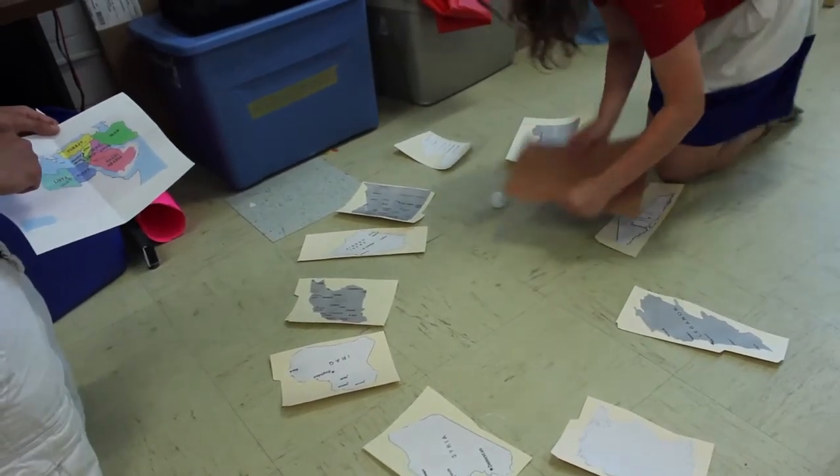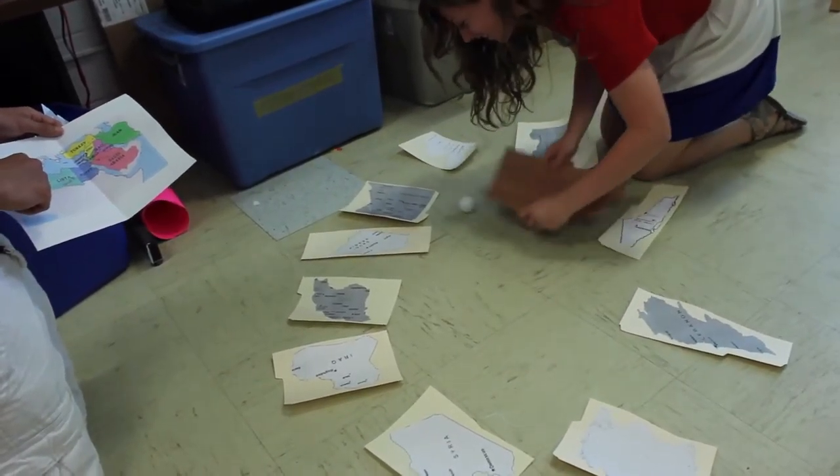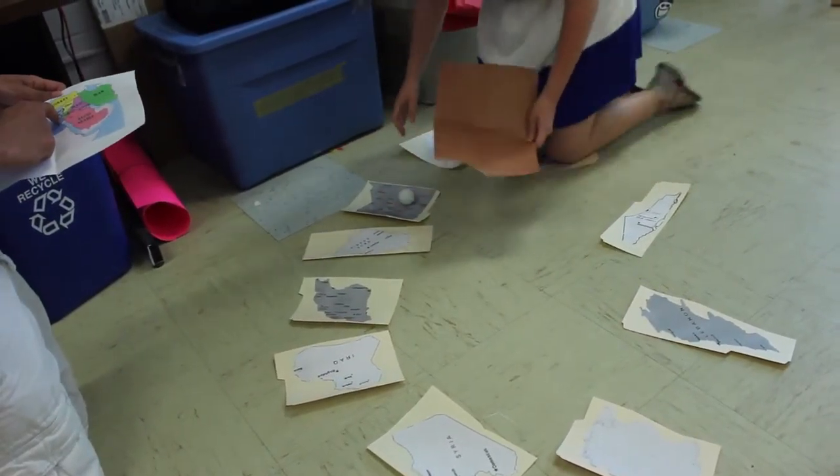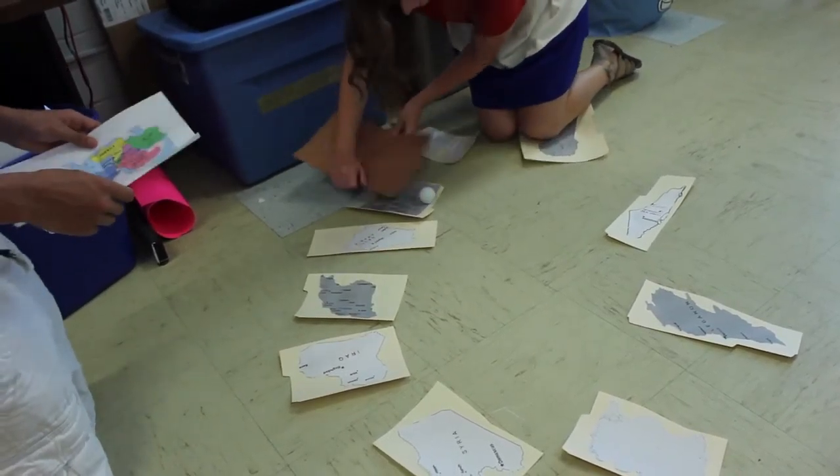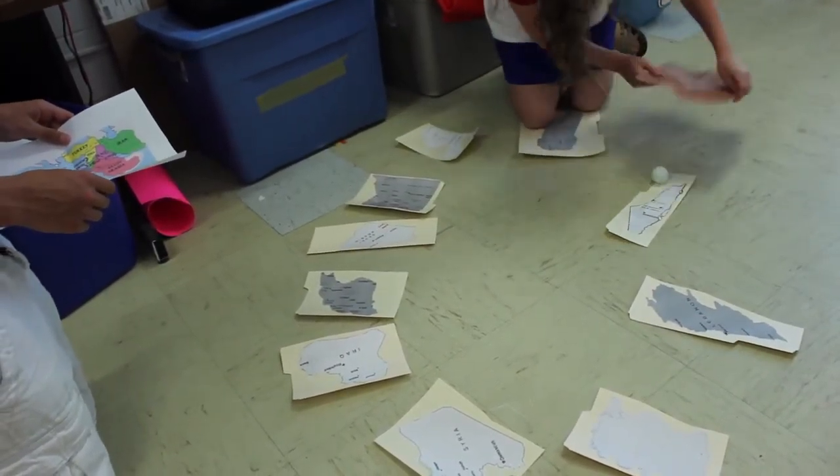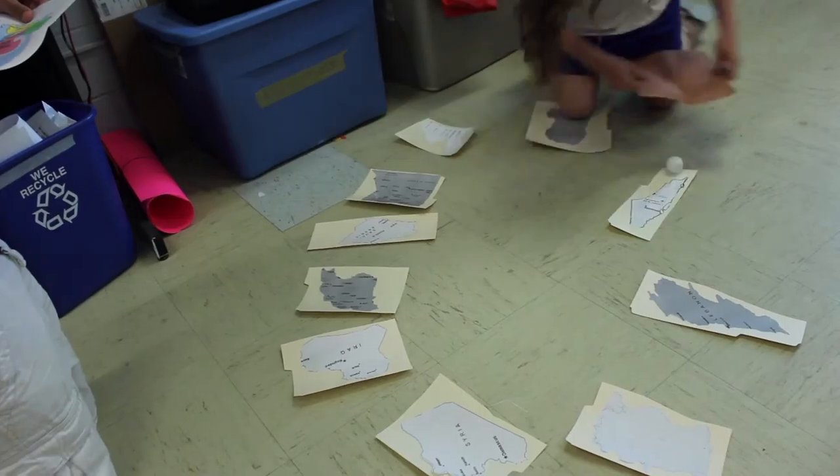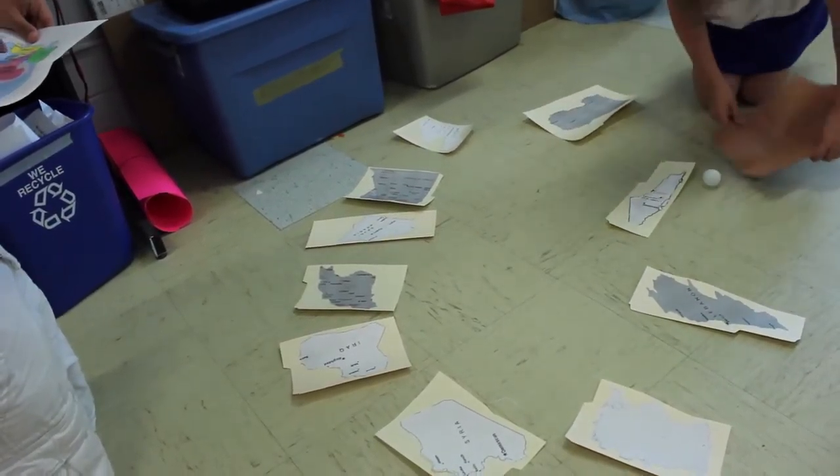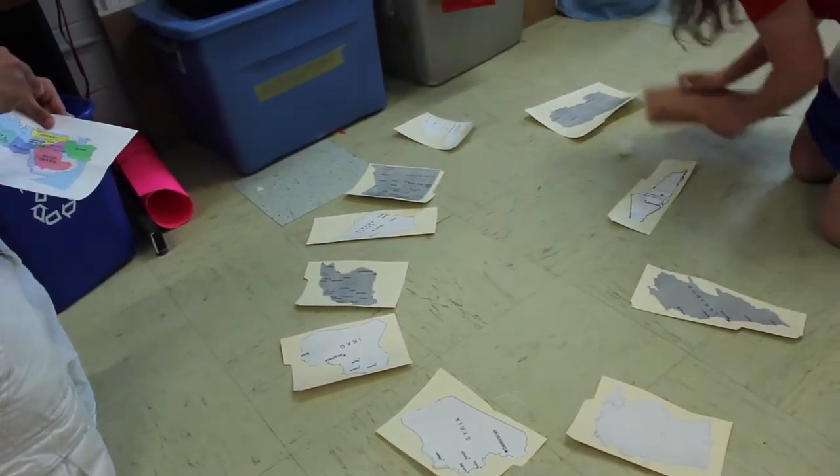There will be a circle of ten papers on the floor. One paper will have a ping pong ball on it. Agents will have a map. Each paper has a different country name on it. The agent will have to move the ping pong ball from country to country, but here's the trick. Each successive country must border the country it came from.